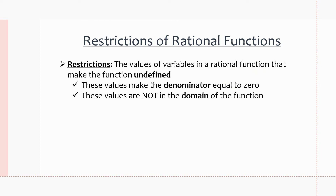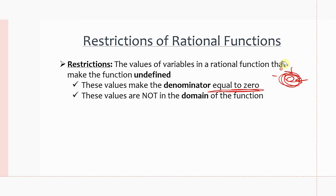Two things to note about restrictions: first, they are values that make the denominator equal to zero — we have the function equals a number over zero, so the denominator equals zero. Second, the values we define as restrictions are not in the domain of the function, because the function cannot be undefined. So a vertical asymptote appears at these x-coordinates, which we will cover later on.